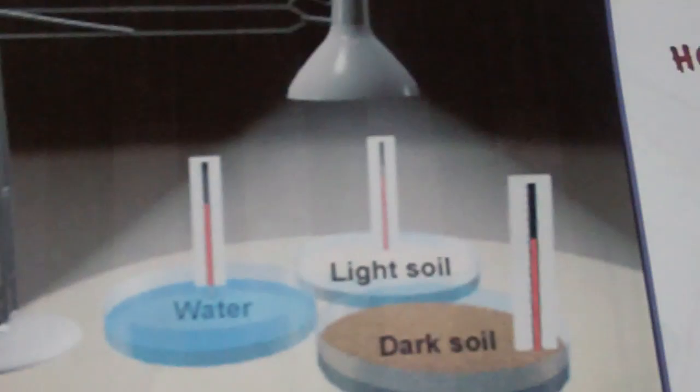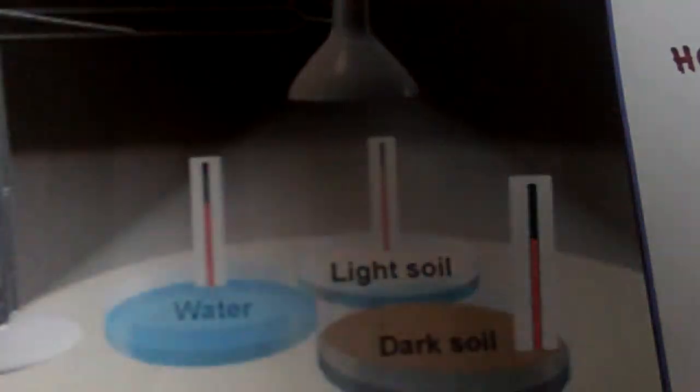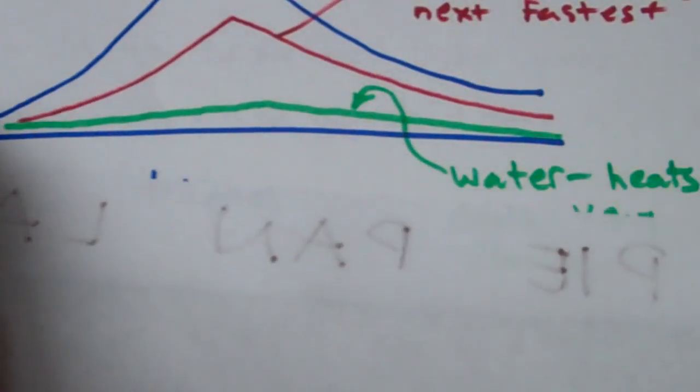What we saw is that the dark soil heated up the fastest, the sand kind of came in second place, and the water came in last place. If we look at data from that lab, I graphed it and it looks something like this.